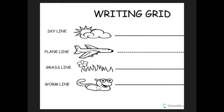G. G is a plain line round letter. Put your pencil on the plain line, fly backwards, curve to the grass line, back up to the plain line, pull down to the worm line and backwards for a hook. G.